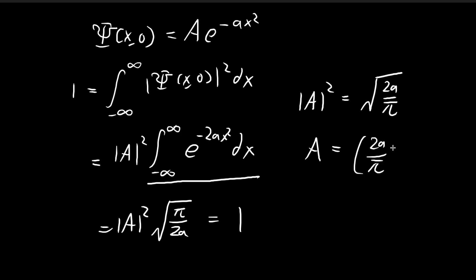Under this choice, we get 2a divided by π to the power of 1/4. This is the answer. If I apply this A to this wave function, then I would have normalized this expression.